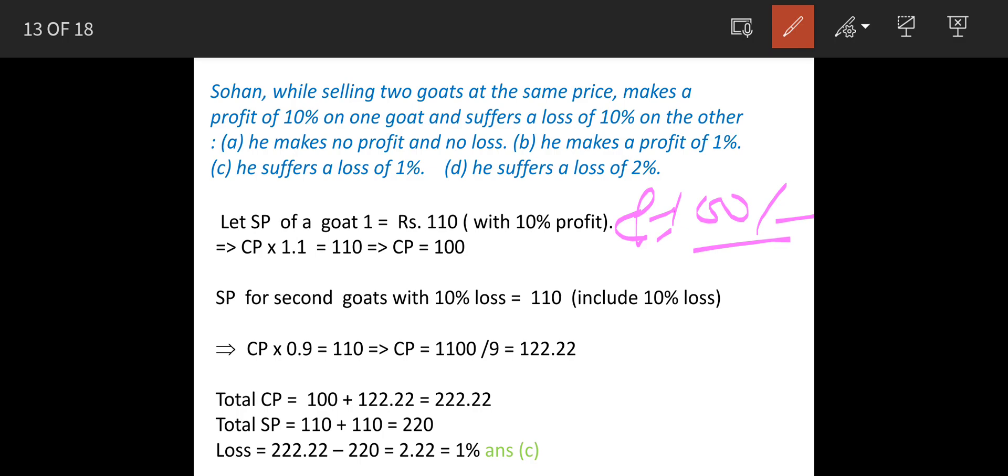So the sale price of the first goat is 110 with 10% profit. That means CP × 1.1 = 110. Therefore, CP is 100 when you solve this for goat 1.